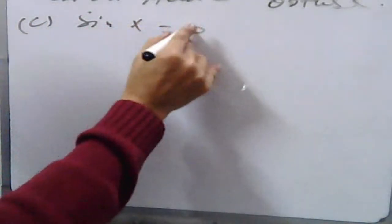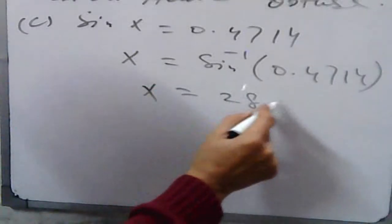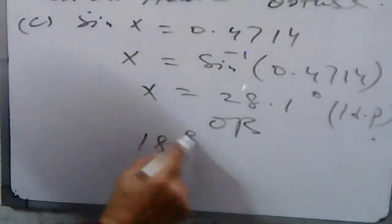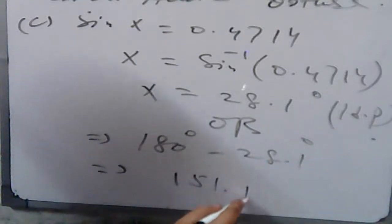For part c, sin x = 0.4714. The value of x is 28.1 degrees, up to 1 decimal place. For the obtuse angle, subtract from 180 degrees to get 151.9 degrees, up to 1 decimal place. This is your required result — either the acute or the obtuse angle, both have been calculated.